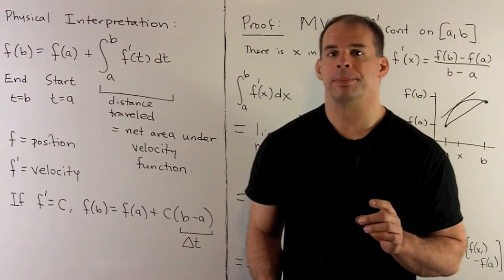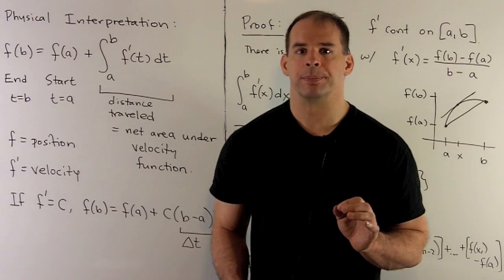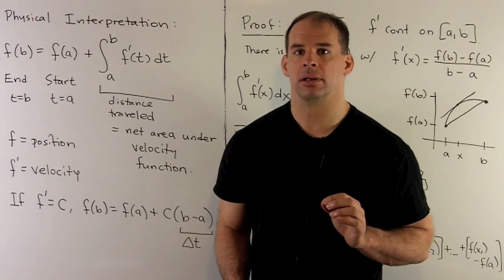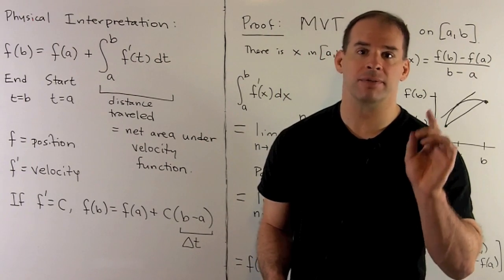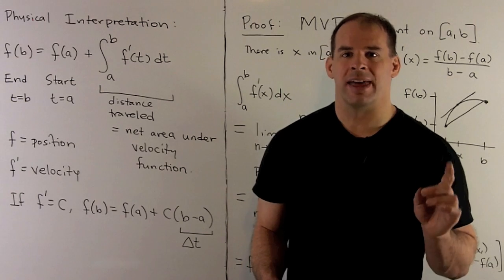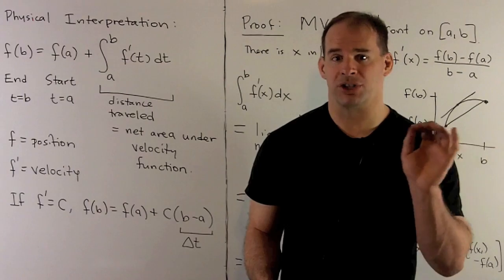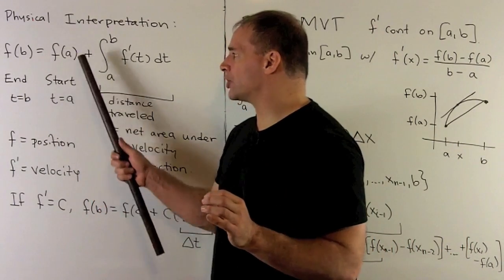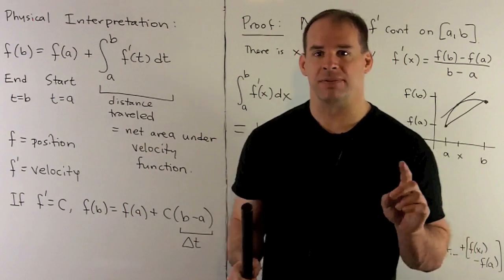Before we prove the theorem, let's look at the physical interpretation using motion on a line — pretend you're in a car that can only go forwards or backwards. Little f is our position function as a function of time t, and f prime is the velocity function. Restating the Fundamental Theorem in terms of function and derivative: our end position equals our starting position plus the definite integral from a to b of our velocity function.